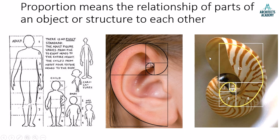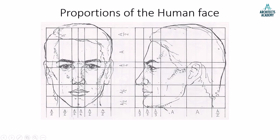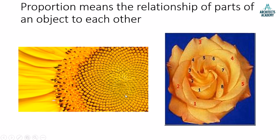The nautilus shell of a marine creature also exhibits certain proportions that are followed as a rule. Similarly, the human face has standard proportions — though they can slightly vary from person to person, they serve as a general rule. The same is seen in nature: petals and flowers also follow a certain relationship to each other and are therefore in proportion.